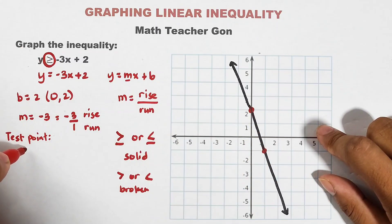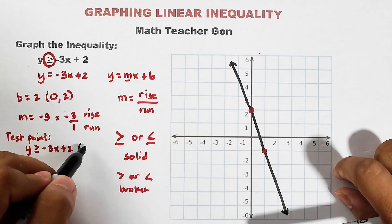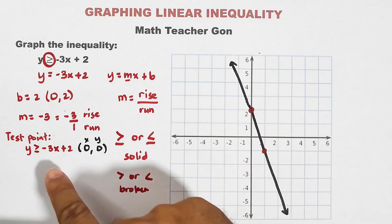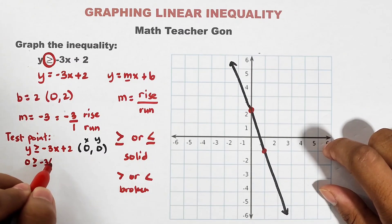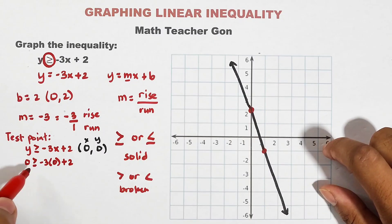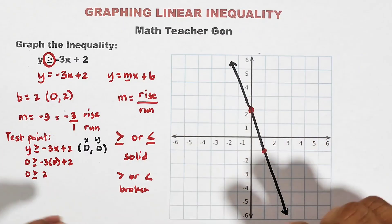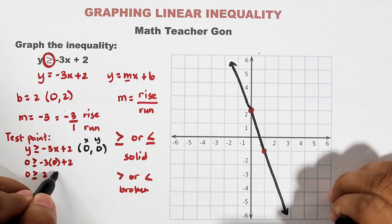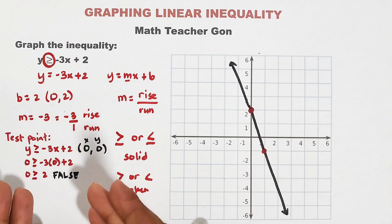Let's copy the given inequality: y is greater than or equal to negative 3x plus 2. Since our test point is the origin, x = 0 and y = 0. Substituting: 0 is greater than or equal to negative 3 times 0 plus 2, which simplifies to 0 is greater than or equal to 2. Let's check if this statement is true or false — 0 is not greater than or equal to 2, so this is false.